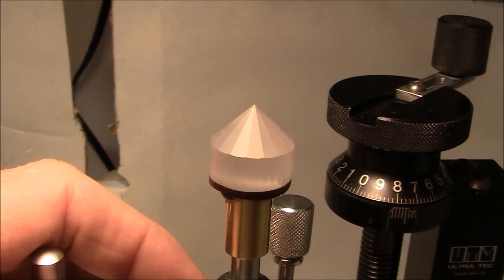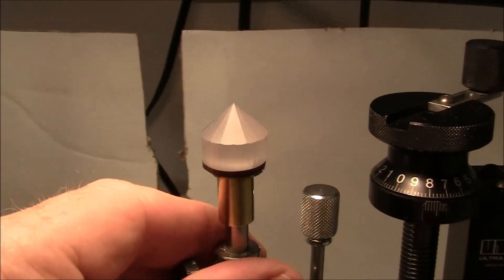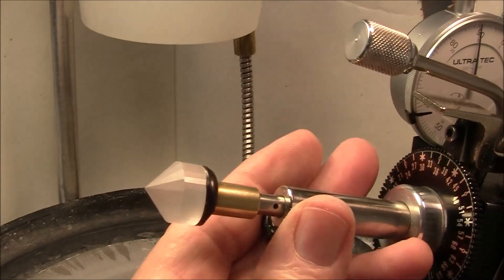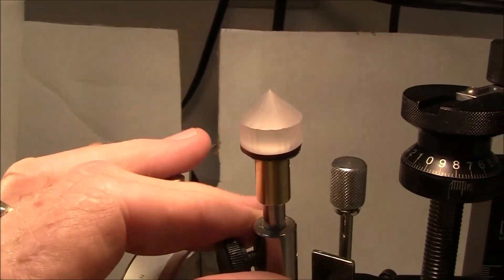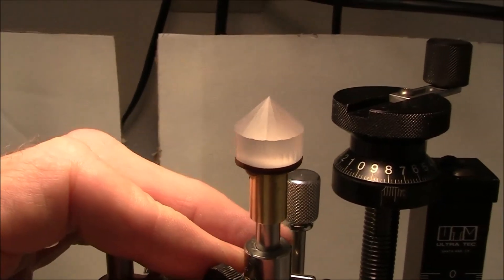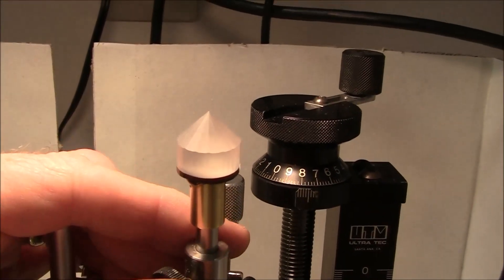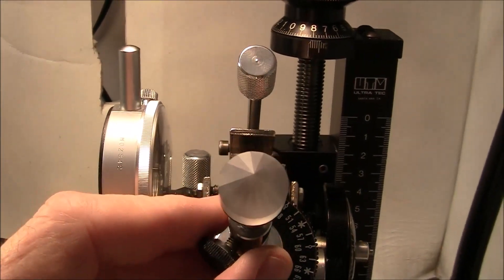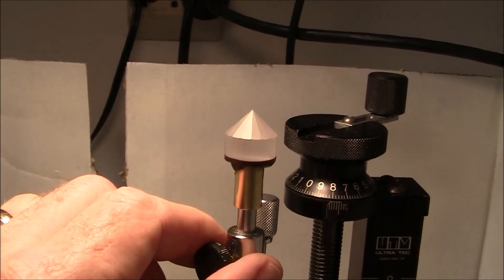I've cut the first set of pavilion facets and I've also done the girdle facets. And I've just finished with the 1200 lap. I went 260, 600, 1200. Now I'll use the 1200 to do the rest of the facets.